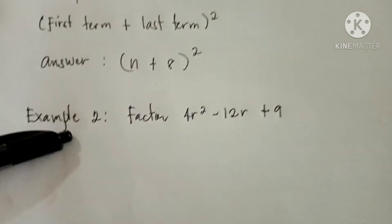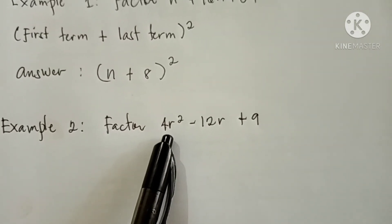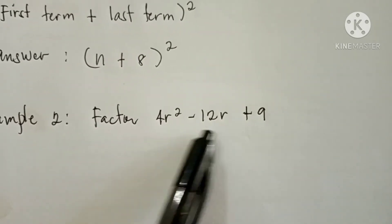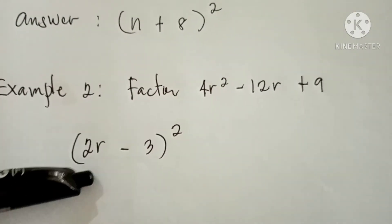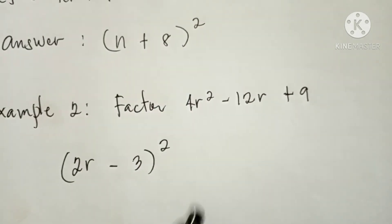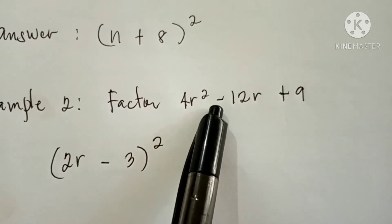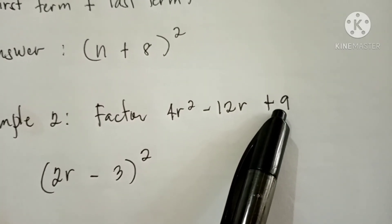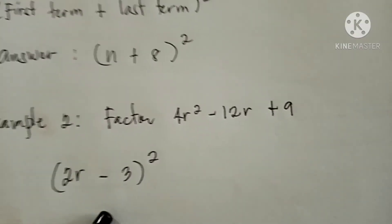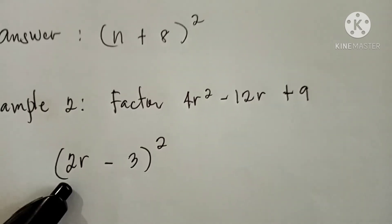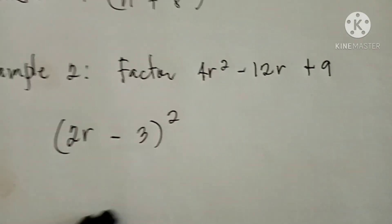Now we are going to proceed to Example 2. Factor 4r squared minus 12r plus 9. We get the square root of the first term and the square root of the last term. The square root of 4r squared is 2r, since 2r times 2r equals 4r squared. The square root of 9 is 3, since 3 times 3 equals 9. Because of the negative middle term, we use minus. So the factored form of 4r squared minus 12r plus 9 is (2r − 3) squared.